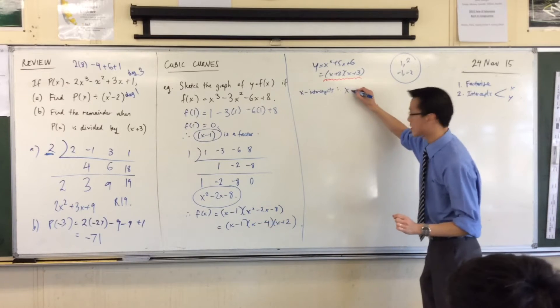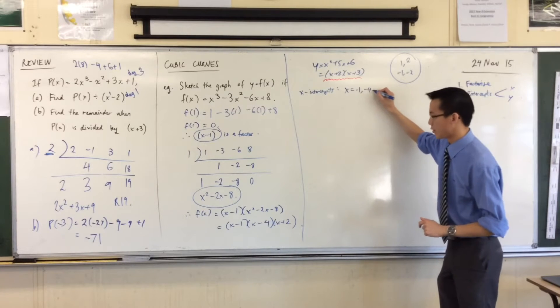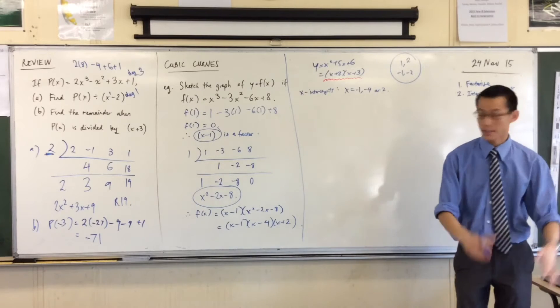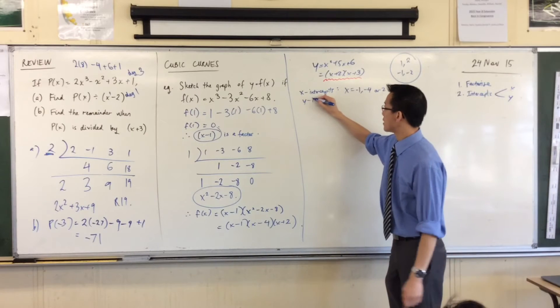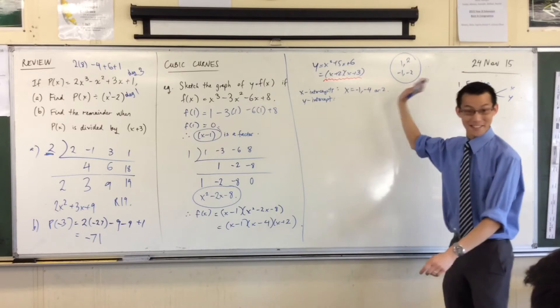I'm going to add on to that. It's x equals, because they're x-intercepts. x equals negative 1, negative 4, or 2. Fantastic. There's a y-intercept. There's only one of them, which is a relief because we've got so many other intercepts.